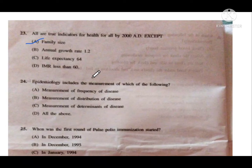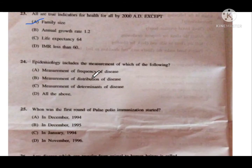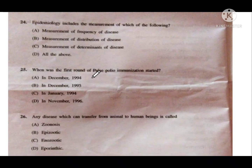Question number 24: Epidemiology includes the measurement of the following — option A is measurement of frequency of disease, B is measurement of distribution of disease, C is measurement of determinants of disease, and D is all of the above. The correct answer is option D — all of the above. Epidemiology includes frequency, distribution, and determinants of disease.